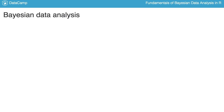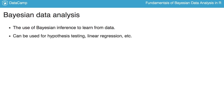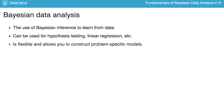Bayesian data analysis is the use of Bayesian inference to learn from data — the known facts — and the unknown quantities we want to learn about are the values of parameters or what future data might look like. Bayesian data analysis is a broadly useful approach, and there are Bayesian versions of common statistical procedures such as hypothesis testing and linear regression. But the real power of Bayesian data analysis is its flexibility and that it allows you to construct problem-specific models that can make the best use of your data.